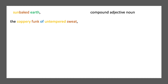The next element, the coppery funk of untempered sweat, is much longer and has the basic structure A of B — a smell and then its source. But here both the A and B parts have two elements: adjective-noun of adjective-noun. Coppery is an interesting smell adjective, as it can also be visual as a color, and it's not uncommonly used to describe a taste as well. The rhythm is nicely balanced with the multisyllabic adjectives modifying monosyllabic nouns on each side of the 'of' — coppery funk, untempered sweat.